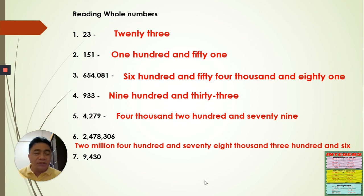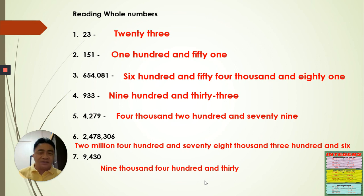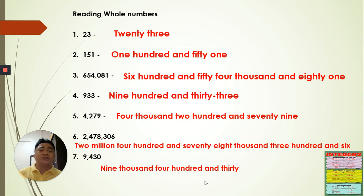The last one is nine thousand four hundred and thirty. So again, you can read any number. Practice reading at home so that you will improve how to read numbers in English words. Some of your classmates this morning could not read the numbers properly in English. I hope you will practice at home, and when you come back, I will ask you again about naming or reading whole numbers.